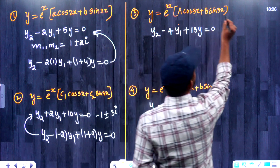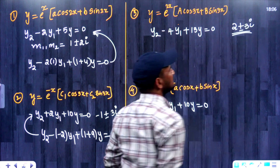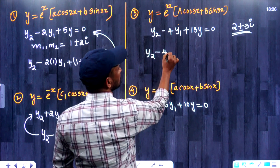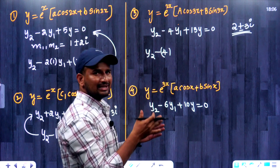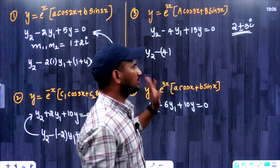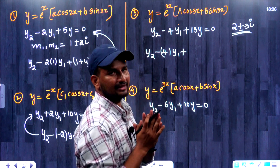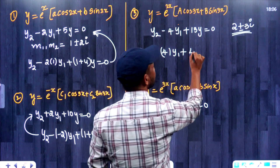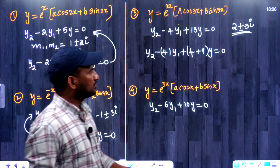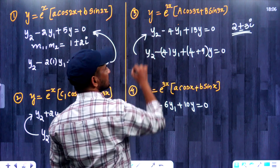The roots in this case are 2 plus or minus 3 iota. The summation of the roots gives 2 plus 2 equals 4. So y2 minus 4y1 plus (real part squared plus imaginary part squared) y equals 0 — real part squared is 4, imaginary part squared is 9 — so y2 minus 4y1 plus 13y equals 0. That is nothing but our answer.